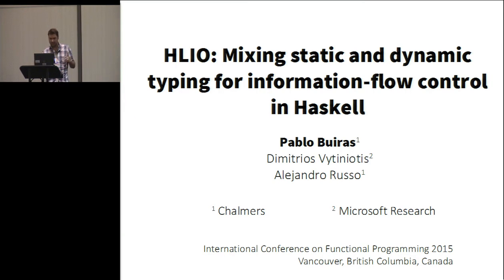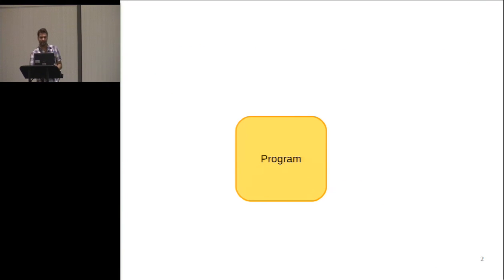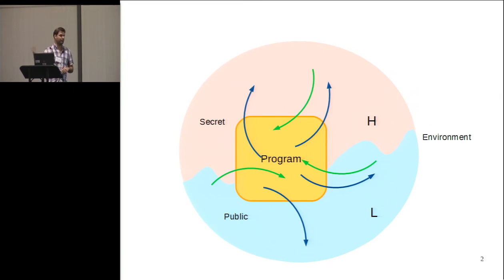So, what do we mean by security in this context, by information flow security? This is a typical program, and this is the typical environment around the program. We assume that we can partition this environment into a secret and a public part. We usually call the secret part H for high security and public part L for low. And the problem here is to check that the program doesn't ship information from the secret part of the environment down into the public part.